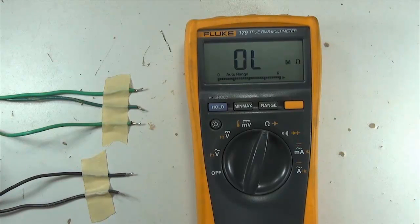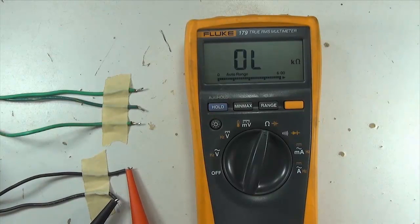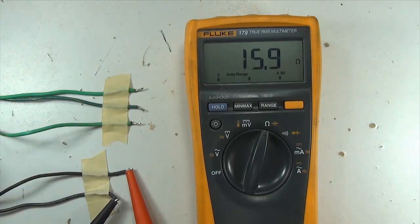Now let's measure the resistance of the primary winding. So we'll carefully connect to the two black wires on the primary side of the transformer. And here we have about 15.9 ohms on the primary side of the transformer. That doesn't look too bad.